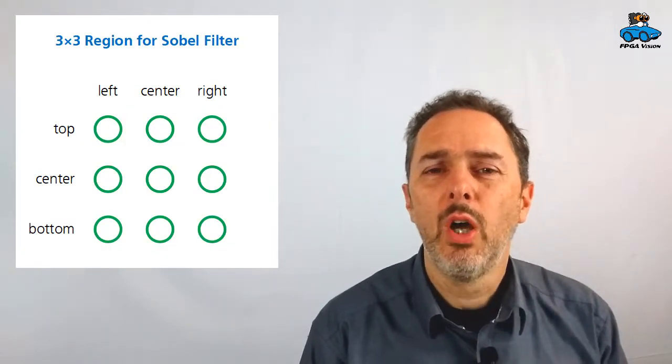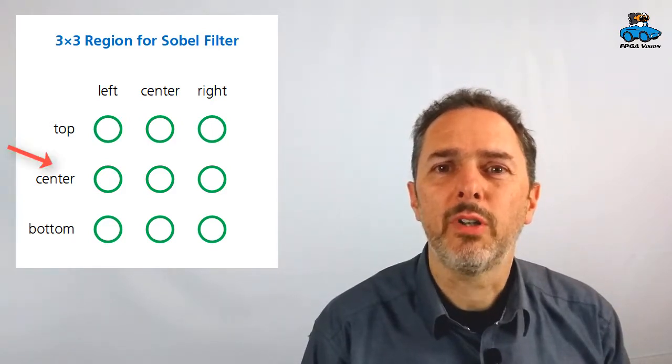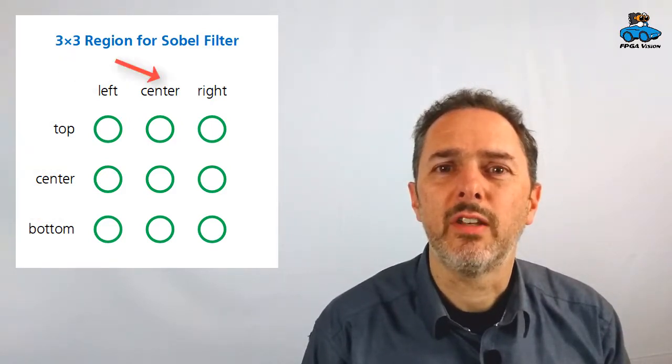We want to detect lanes on a street and for this we take 3x3 regions of pixels in an image. So that's top, center and bottom row and left, center, right column.